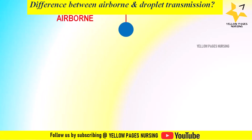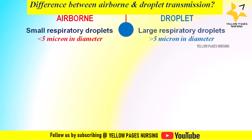Airborne transmission is a mode of disease transmission in which infectious agents such as bacteria or viruses are spread through small respiratory droplets less than 5 microns in diameter that remain suspended in the air and can be inhaled by others. Droplet transmission involves infectious agents spread through larger respiratory droplets more than 5 microns in diameter, expelled by an infected person.